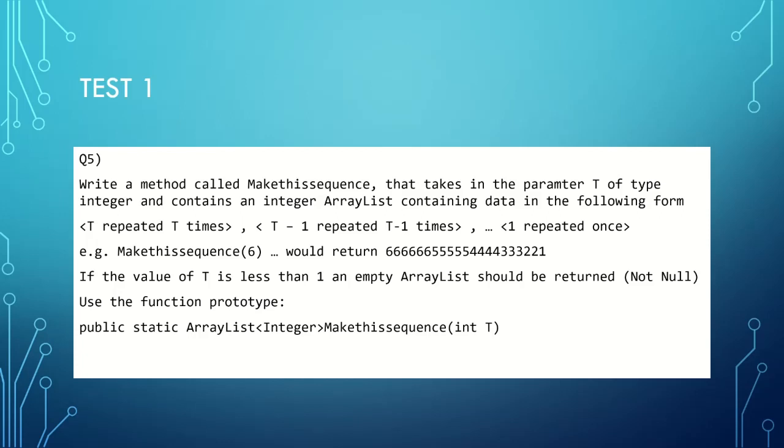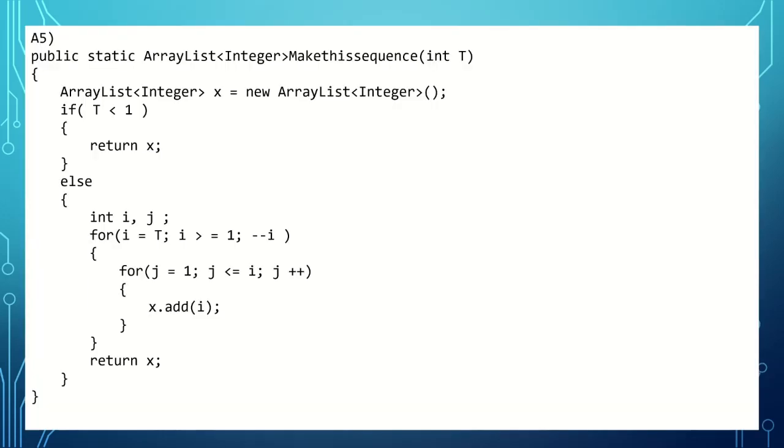And again, if our value of t is less than one, we're going to be returning an empty ArrayList. Again, this isn't the same as null, and we're going to be using the below function prototype. So give that a go and let's see how you do. All right, you should have given that a go. This is the answer I got.